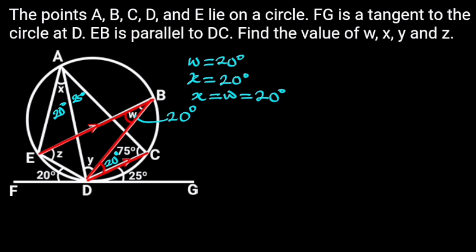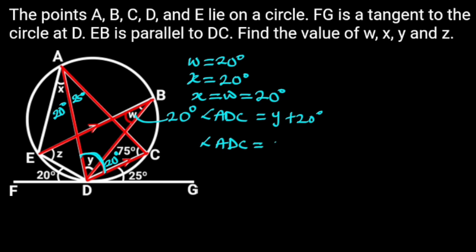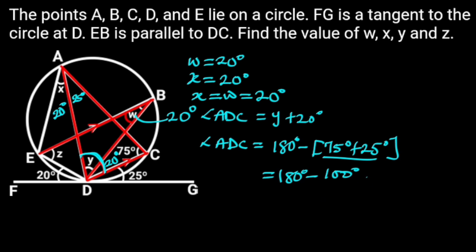Now that we have gotten these angles, we can go ahead and find Y. From triangle ADC, observe that angle ADC is equal to Y plus 20 degrees. We are going to find the value of angle ADC from this triangle, which will enable us to get Y. From triangle ADC, angle ADC is equal to 180 degrees minus 75 degrees plus 25 degrees. So 180 degrees minus 100 degrees is equal to 80 degrees. Since angle ADC is Y plus 20 degrees, we can say that Y plus 20 degrees is equal to 80 degrees, so Y will be equal to 80 degrees minus 20 degrees, which is equal to 60 degrees.